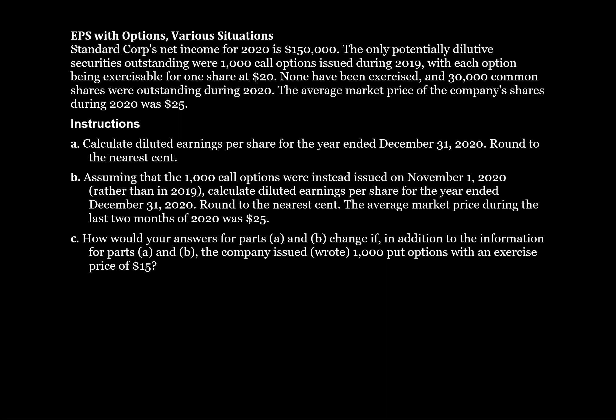So we've got net income. The only potential dilutive securities were 1,000 call options exercisable for one share at $20. None have been exercised and 30,000 common shares were outstanding. The market price was $25, meaning that whoever is holding these call options can buy a share at $20 and sell it in the market at $25. So the first question we need to answer is: is this option in the money? If it's not in the money — not profitable for the person to exercise — we assume it will not be exercised, even in our what-if scenario for diluted earnings per share.